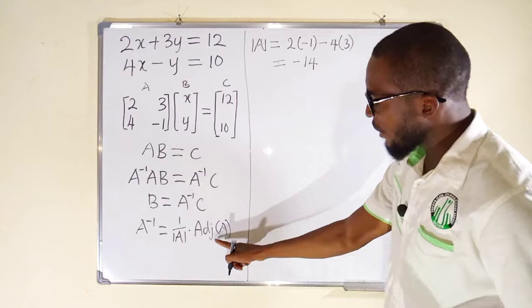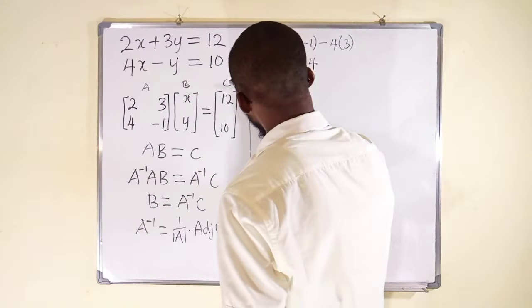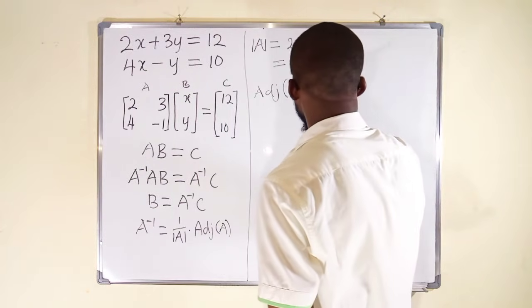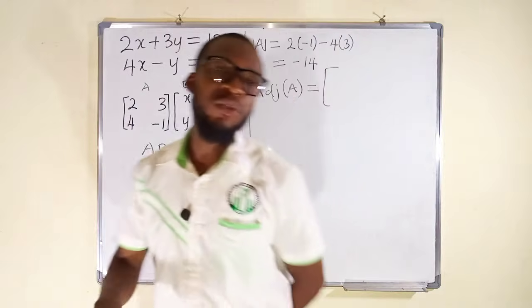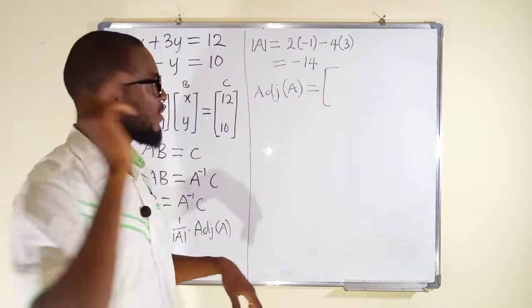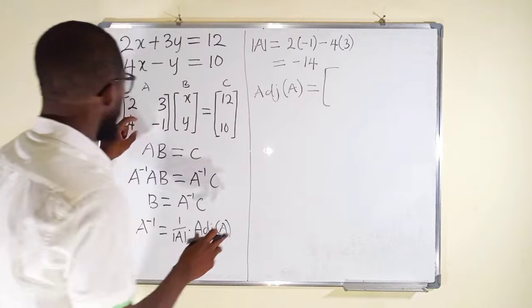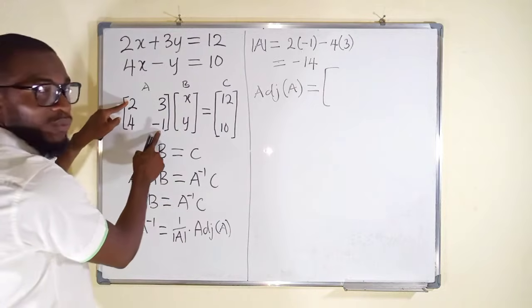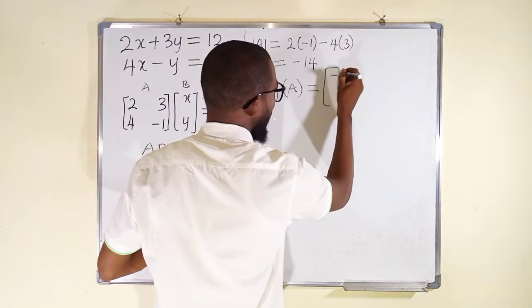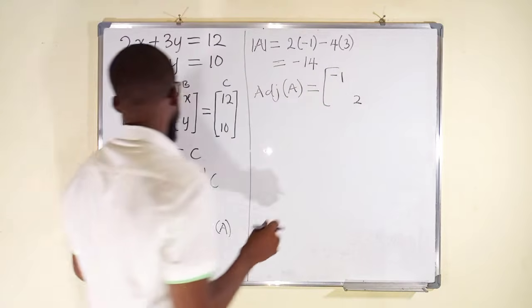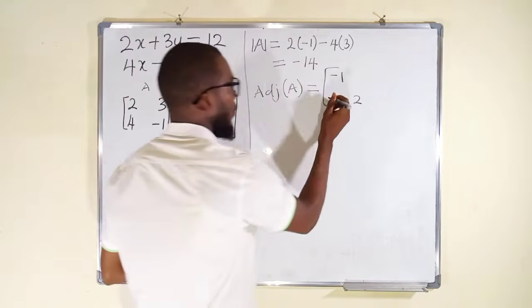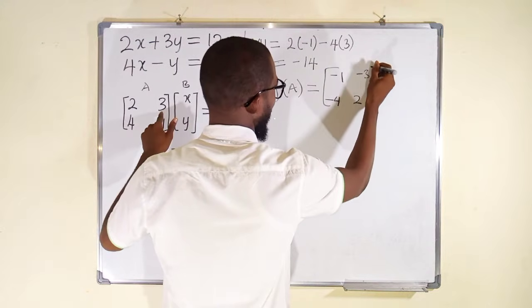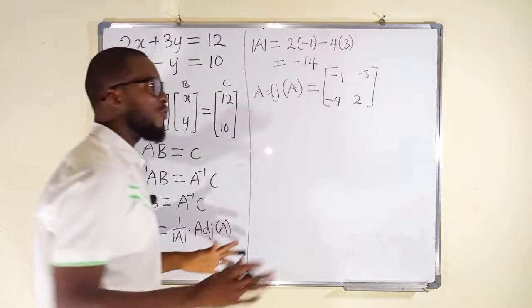Now let us go ahead and find the adjoint of this matrix. I will follow a shortcut, as I have shown you how to find the adjoint of a matrix in our previous lesson. For a 2 by 2 matrix, we are just going to interchange the leading diagonals. We have 2 and negative 1, so I will start by writing negative 1, then 2. Then the other diagonals, I am going to multiply them by negative 1, giving negative 4 and negative 3. This is the adjoint of this matrix.